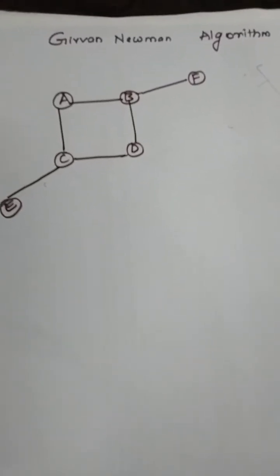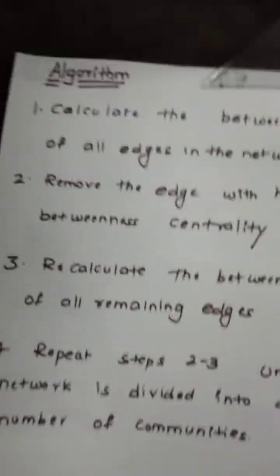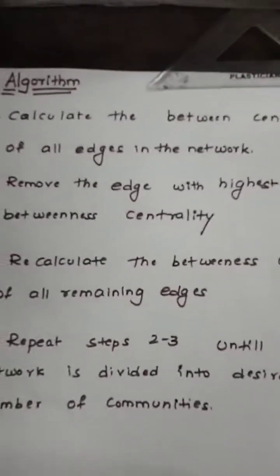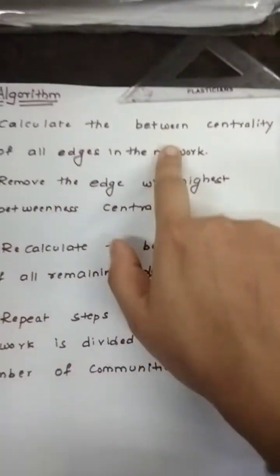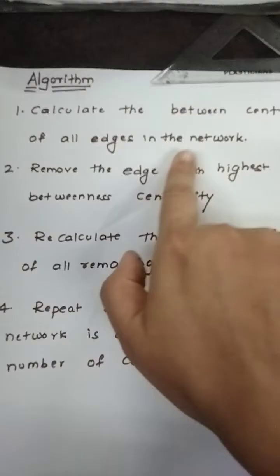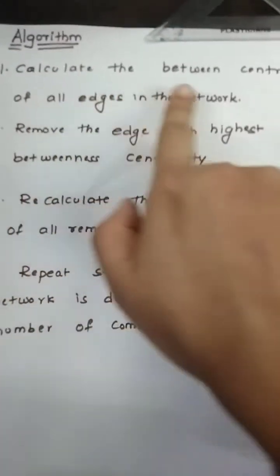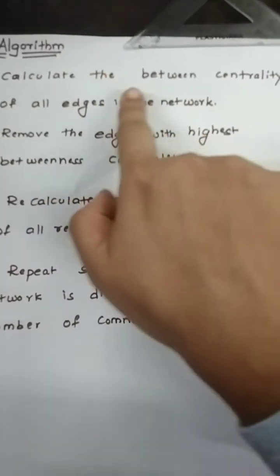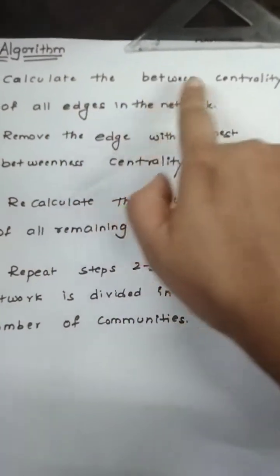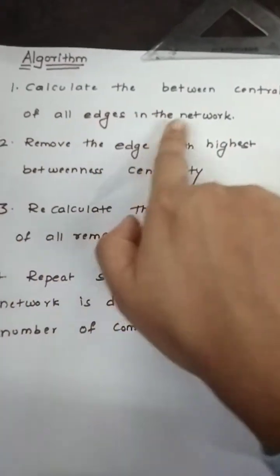The first step of the algorithm says you have to calculate the betweenness centrality of all the edges in the network.